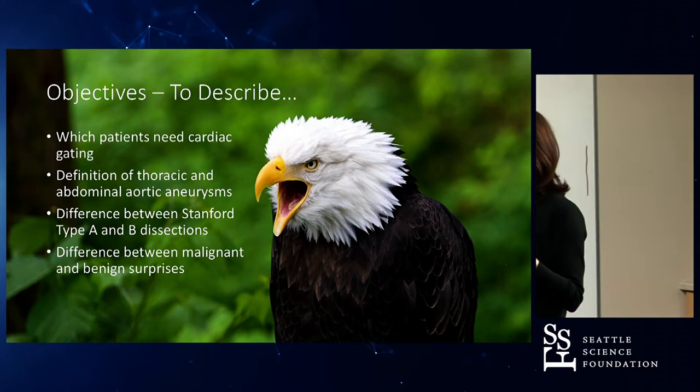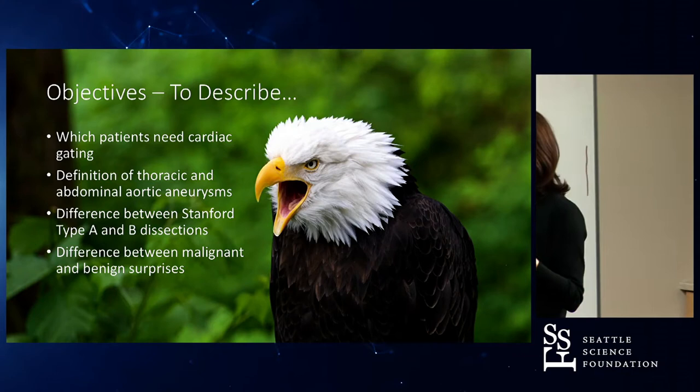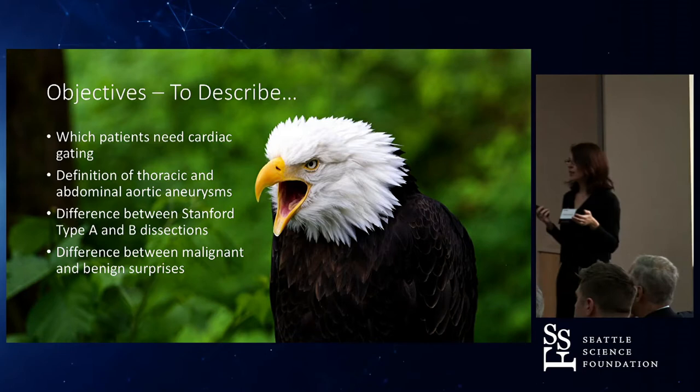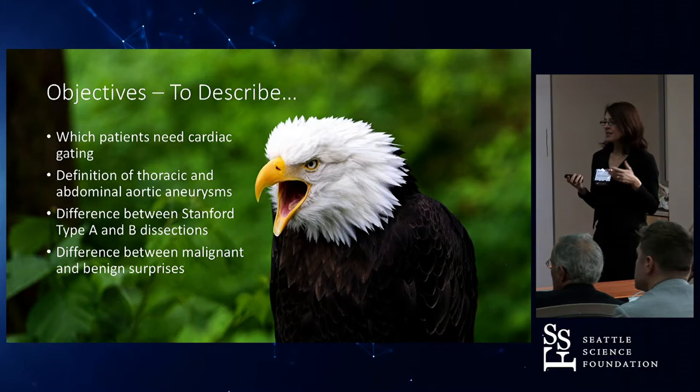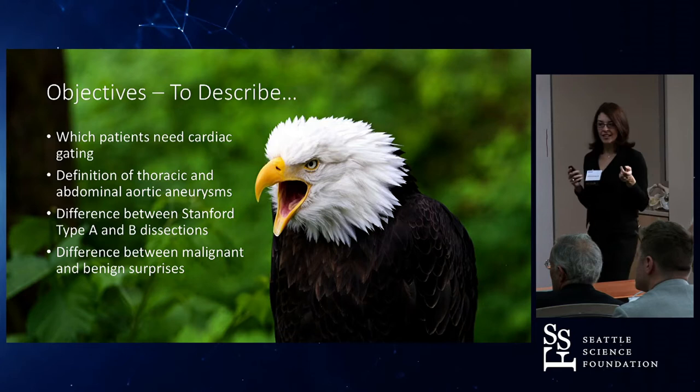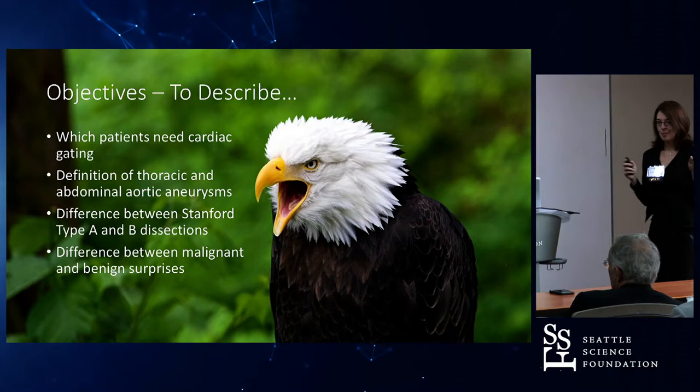We'll look at cardiac gating versus not gating CTs, and the difference in how you define a thoracic aortic aneurysm and an abdominal aortic aneurysm. The difference between a Stanford type A and type B. And then we'll look at the difference between malignant and benign. We're not talking cancer here, but that's going to be the surprise at the end. So keep awake — I hope you've had your coffee.